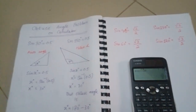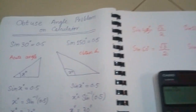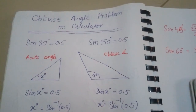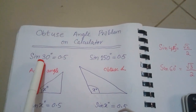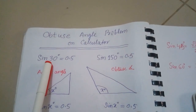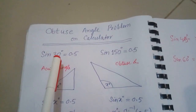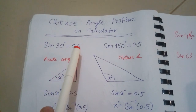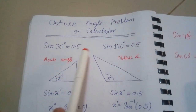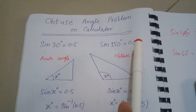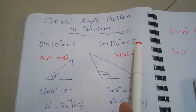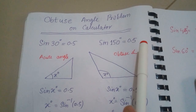So let's come to the problem in trigonometry. In the same way, sin 30 will give you the answer 0.5 and sin 150 will also give you the answer 0.5 on the calculator.